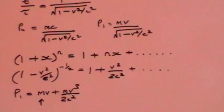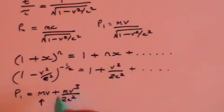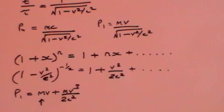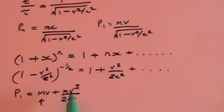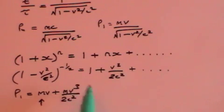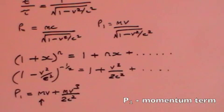What is mv? That is ordinary momentum. And mv cubed over 2c squared is a relativistic correction when speeds approach the speed of light. If v is small compared to c, that second term falls away and we get the standard momentum term, P1 equals mv. So we can conclude that P1 must be a momentum term.